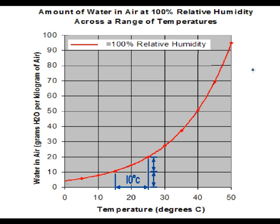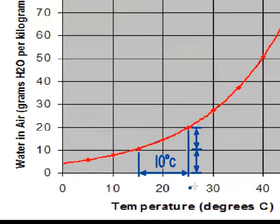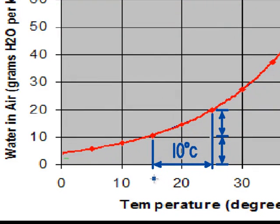This graph shows the amount of water which can be held in a parcel of air at different temperatures. We can see that as we increase the temperature, the amount of water which can be held by the atmosphere increases. In fact, if we were to increase the temperature from 15 degrees to 25 degrees — so increase the temperature by 10 degrees centigrade — we almost get a doubling in the amount of water that this parcel of air can hold.